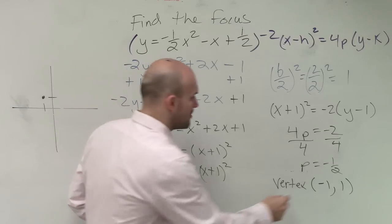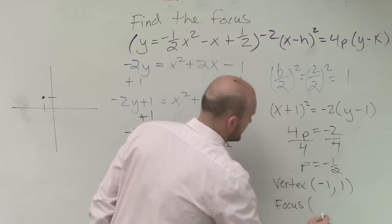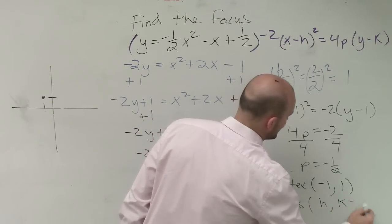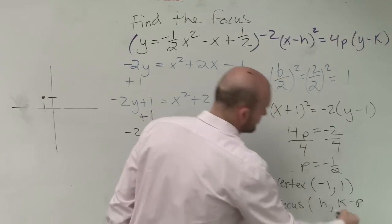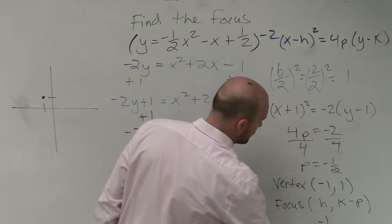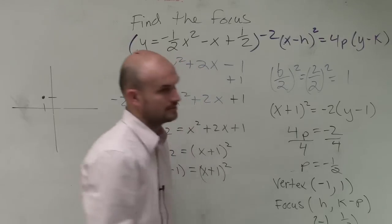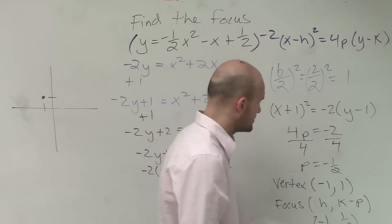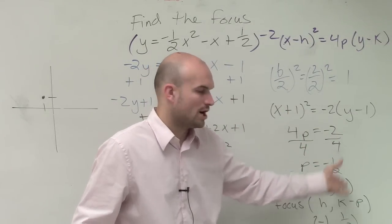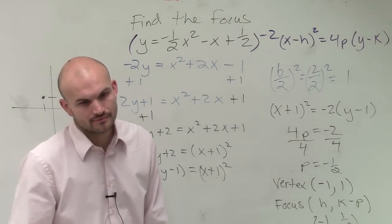Below. Below. So my vertex, or my focus, is going to be h comma k minus p, which is subtracting my one-half, because we know it's negative. So it's going to be negative 1 comma positive one-half, which I don't want to get confused, because the p is negative which we know, so it's going to be 1 minus one-half, which would be negative 1, one-half.